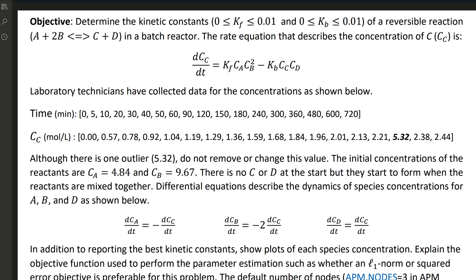What can we do with the objective function? We're going to determine the kinetic constants of Kf forward and Kb backward. This is a reversible reaction with A plus 2B goes to C plus D in a batch reactor.